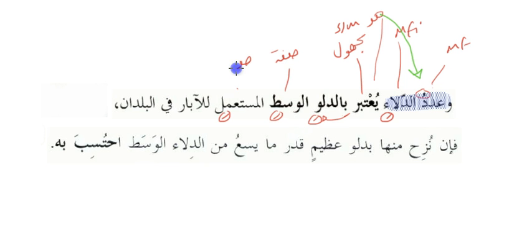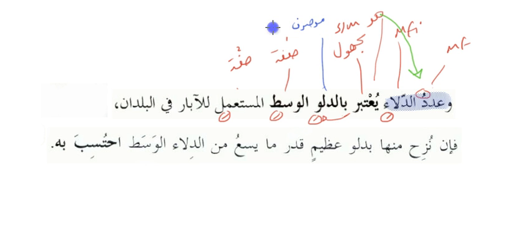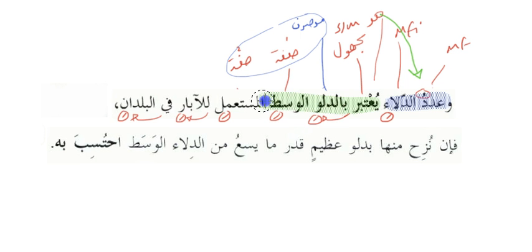Okay, صفة number one and صفة number two, and then دل is the موصوف. للآبارة is جار مجرور, في البلدان is جار مجرور, and then all of this actually becomes the خبر of عدد الدلاء.